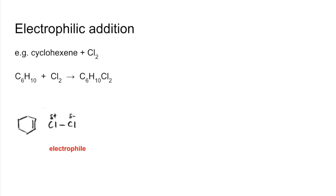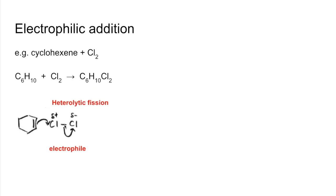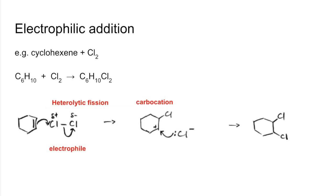This allows the molecule to act as an electrophile — an electron pair acceptor — because of the slightly positive part. A pair of electrons from the double bond is attracted to that chlorine, and then the pair of electrons in that bond is completely repelled onto the other chlorine, breaking the bond by heterolytic fission — the chlorine gets both electrons. This gives us a carbocation and a chloride ion. The chloride ion then attaches to the positively charged carbon, giving the product 1,2-dichlorocyclohexane.